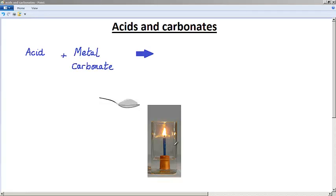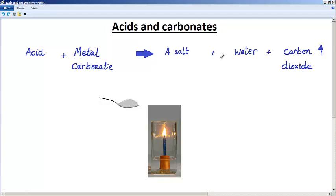In this lesson we're going to look at what happens when we add an acid to a metal carbonate. First of all, let's just complete the general equation for the reaction. So we can see that any acid, when added to any metal carbonate, will always produce a salt, water and a gas called carbon dioxide.